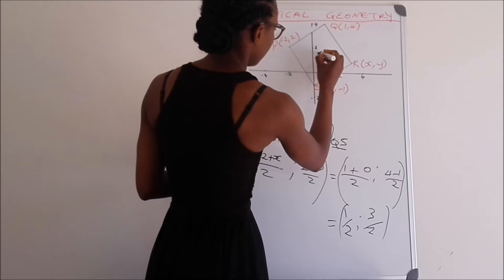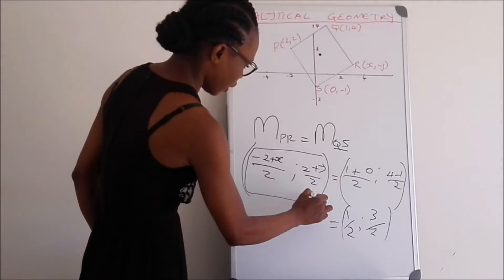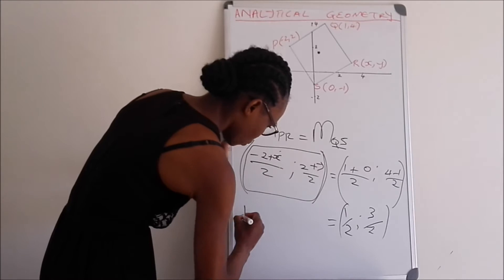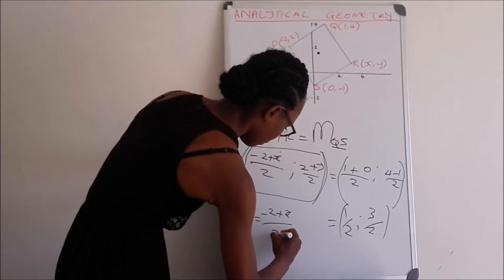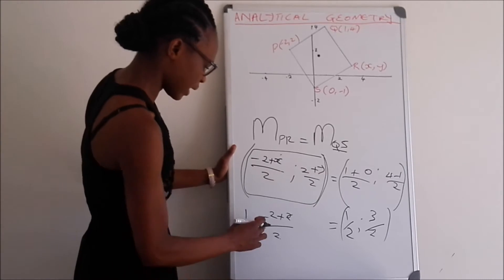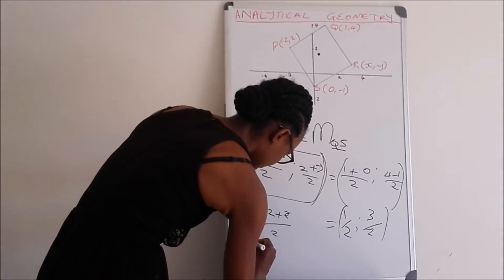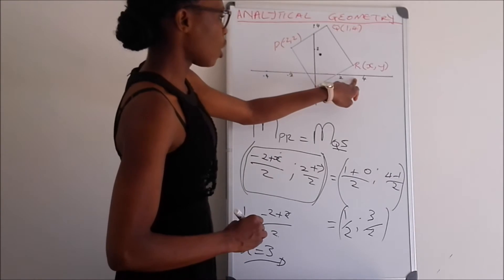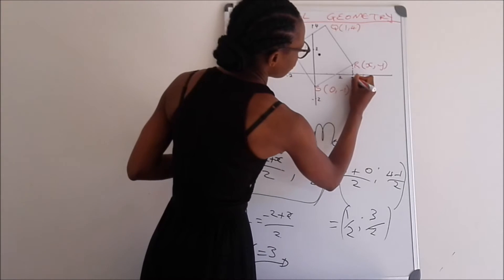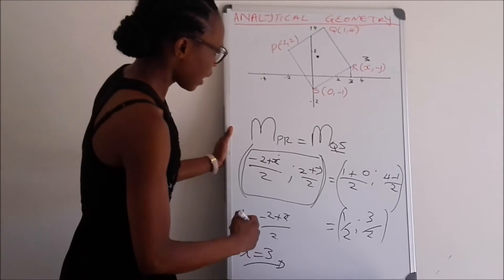Now we equate those midpoint values to find the unknowns x and y. For the x-coordinate: 1/2 = (−2 + x)/2. Multiplying both sides by 2 gives 1 = −2 + x, so taking −2 to the other side: x = 3. The x-coordinate of point R is 3, which also makes sense from the shape of the parallelogram.